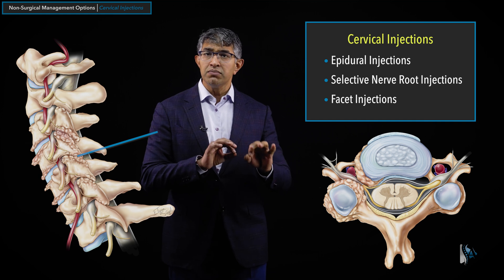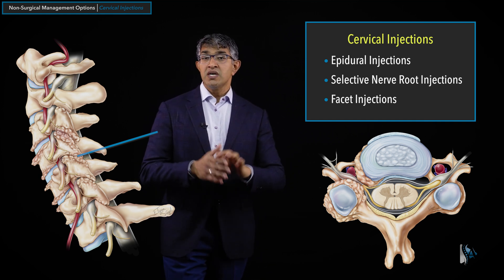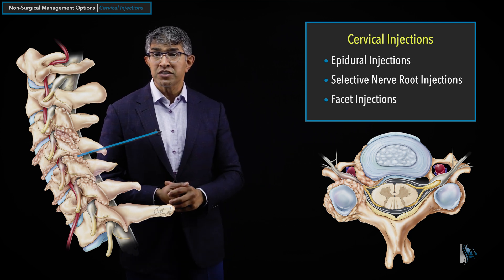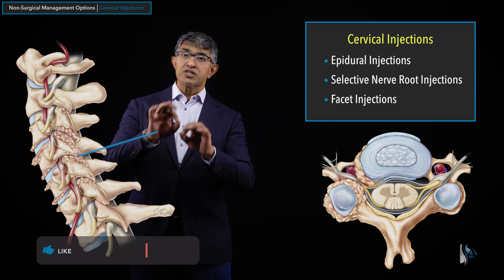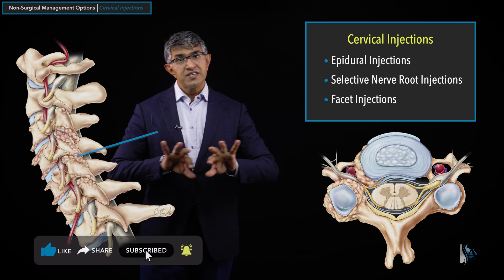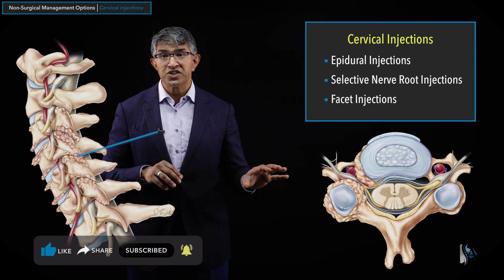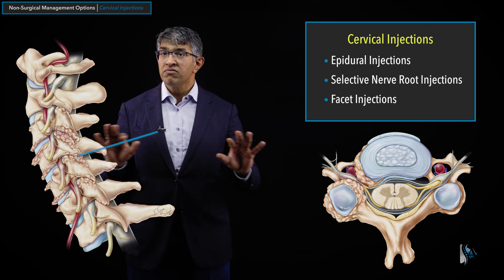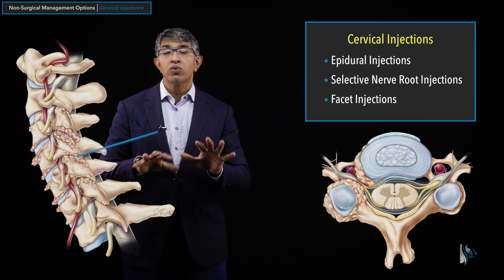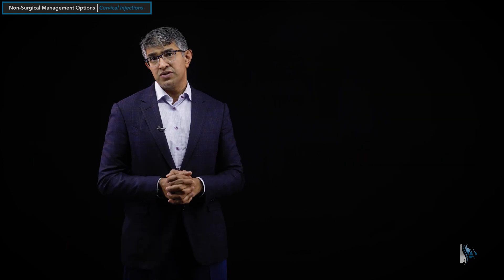Sometimes you'll go to your primary care doctor or a pain management person, and they do an injection where they ask how it feels and put a needle in where you're having muscular pain. That is a different type of injection called a trigger point injection. Those are very common and very nonspecific — they can certainly help people, but they're not one of the things I wanted to discuss in great detail in this section.